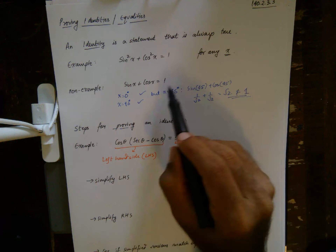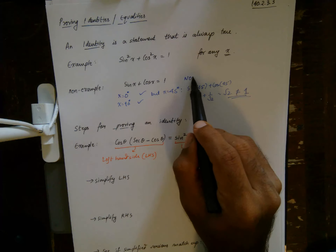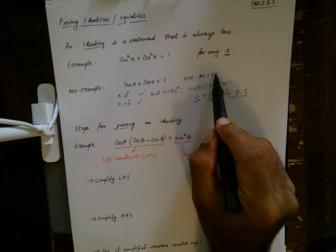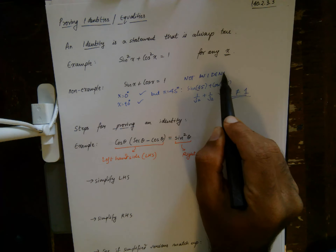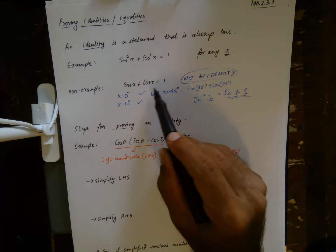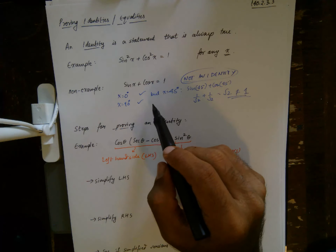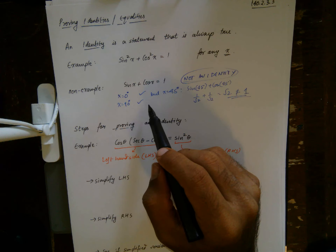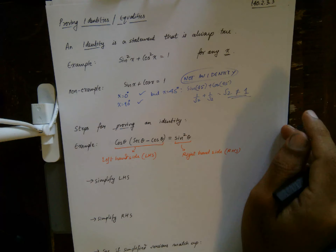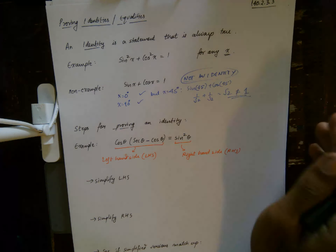So sin(x) + cos(x) = 1 is not an identity, because it may be true for some values of x but it's not true for all values of x.